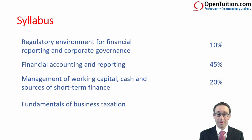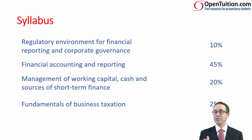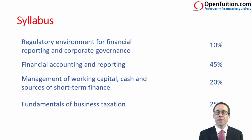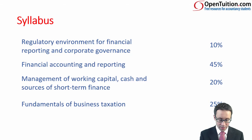The last section covers the fundamentals of business taxation, which ties in to the title of the paper — financial accounting and taxation — and makes up the remaining 25 percent. It doesn't use any specific tax rules from any tax jurisdiction; it just looks at the basic principles that the majority of tax jurisdictions will follow, which you can then apply specifically in your country. So 25 percent of 60 is 15 questions.